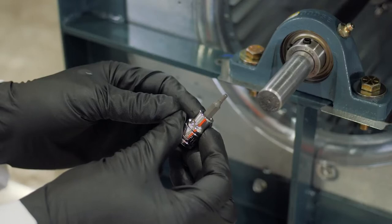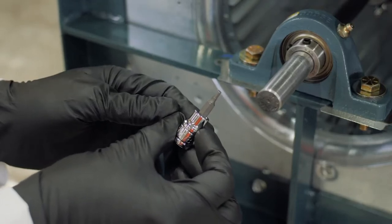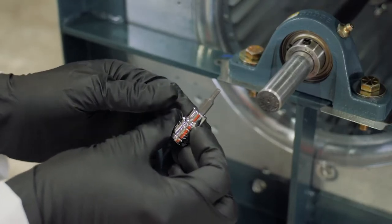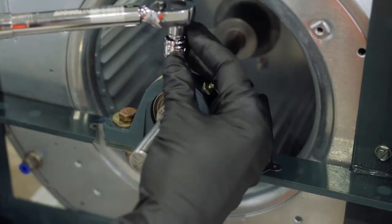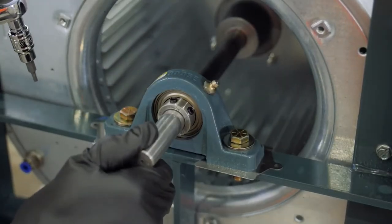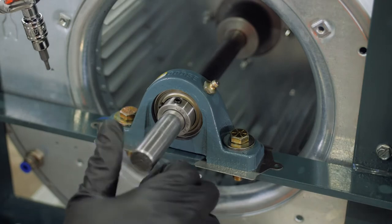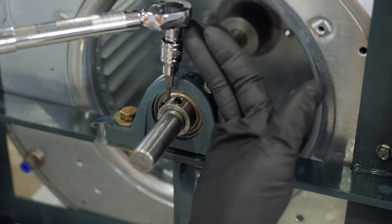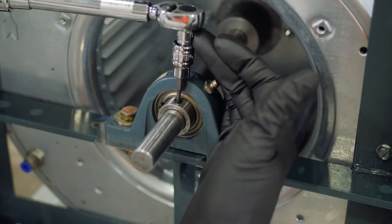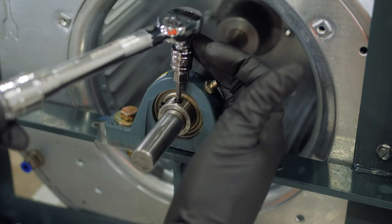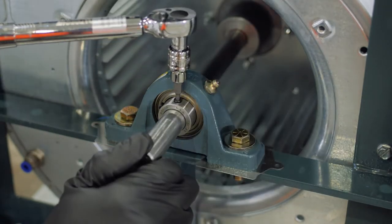To achieve proper installation torque, ensure the hex driver is in good condition with no rounded corners. To prevent rounding, the hex driver should be fully seated and perpendicular to the set screw during tightening. Use your second hand to firmly hold the head of the torque wrench to ensure full engagement and perpendicularity.